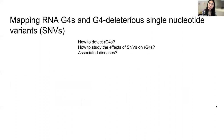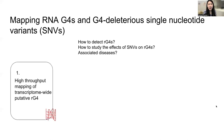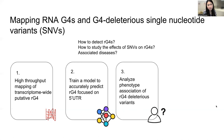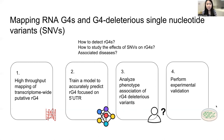Knowing the regulatory importance of RG4, my research questions are: how can we first predict the formation of RG4 at a large scale, and then study the effects of single nucleotide variants that break the predicted G4 formations? And what are the associated diseases for these G4 deleterious variants? To answer these questions, this project is divided into four steps. First, we get the dataset of high-throughput mapping of transcriptome-wide putative RG4, then train a model to accurately predict RG4 focused on 5' UTR. Next, we analyze phenotype associations of RG4 deleterious variants predicted by the model. Lastly, we perform experimental validation on the RG4 deleterious variants.